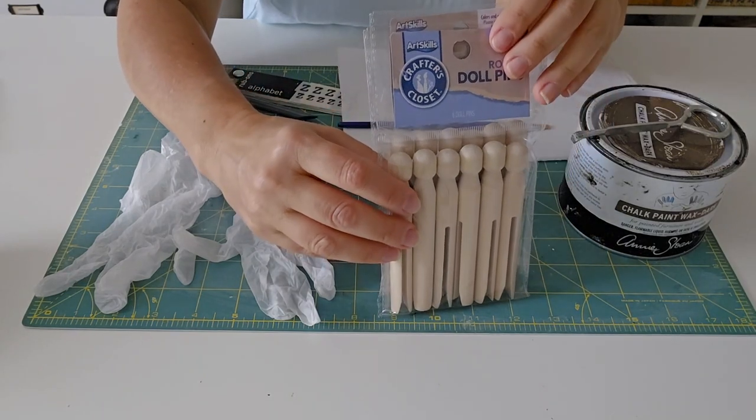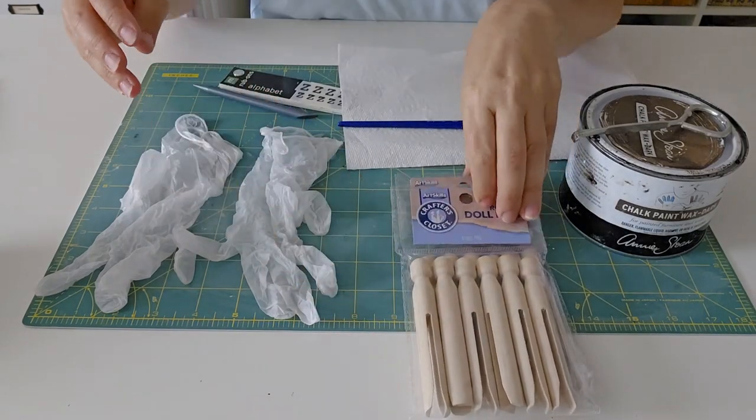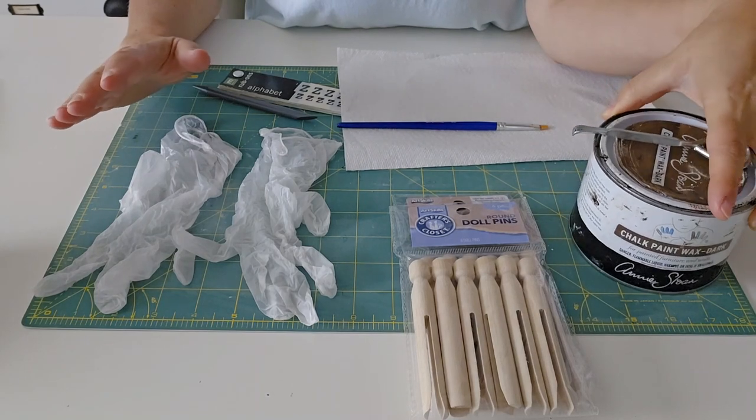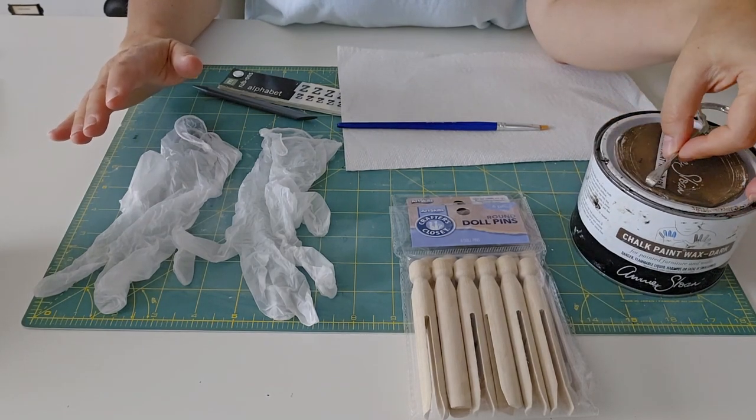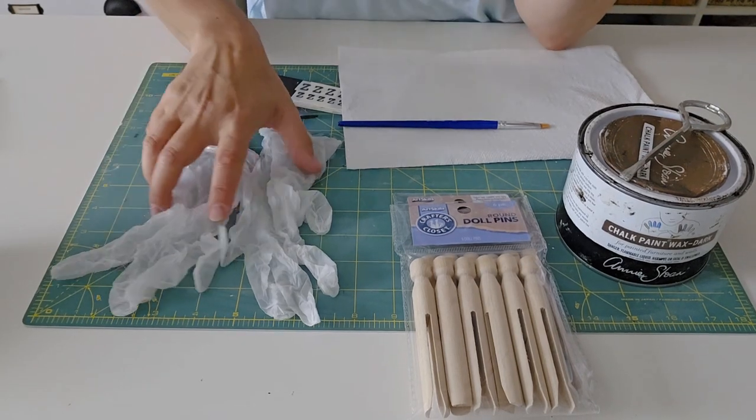You're gonna need some dark furniture wax or alternately you could use stain. You could even use Rit dye in brown. I like to use some disposable gloves when I'm doing stuff with wax.